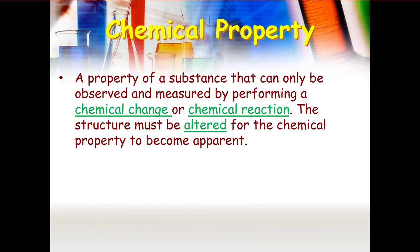All right. Now chemical properties. A chemical property is a property that can only be observed and measured by performing a chemical change or chemical reaction. So the structure has to be altered or changed for the chemical property to become apparent.